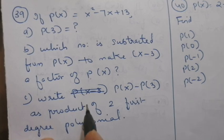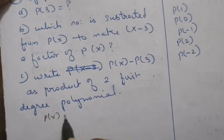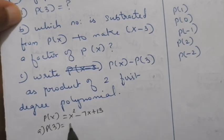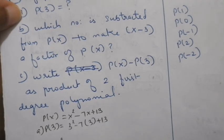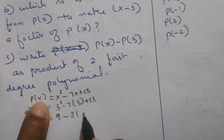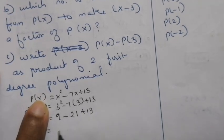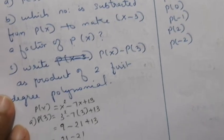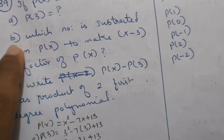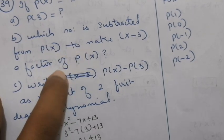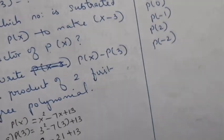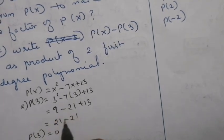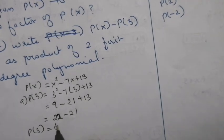Given p of x equals x squared minus 7x plus 13, find p of 3. So p of 3 equals 3 squared minus 7 times 3 plus 13 equals 9 minus 21 plus 13. Note: 9 plus 13 is 22, minus 21 gives 1. Correction — p of 3 equals 1, not 0.